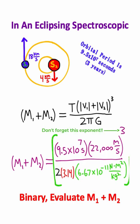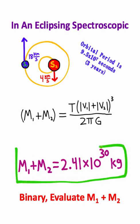So if you plug this entire number into a calculator, you should get a value of about 2.41 times 10 to the 30th kilograms, which is the total mass of the two stars combined.